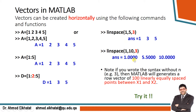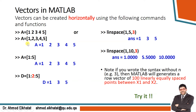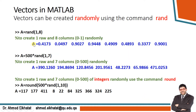Now, suppose you want to create random vectors. The rand function can be used for this. Inside the parentheses you specify the number of rows and the number of columns. So rand(1, 5) creates one row and five columns. You can change these values to get whatever size you want. By default, rand creates random numbers from zero to one.